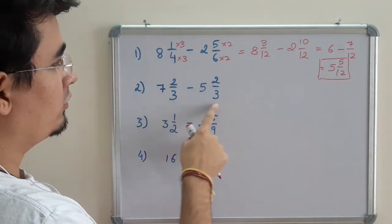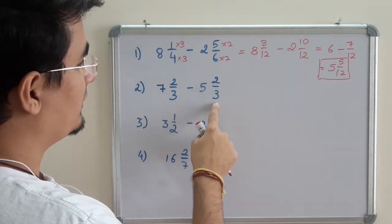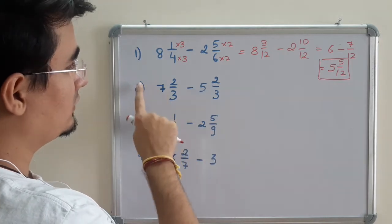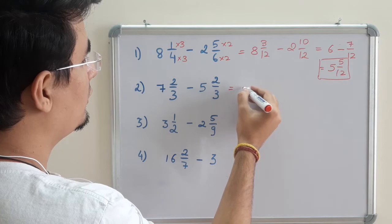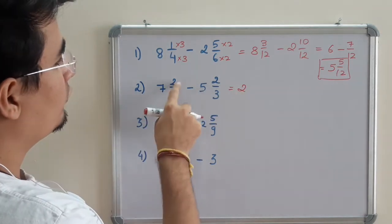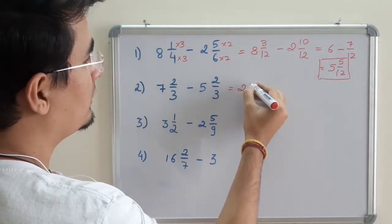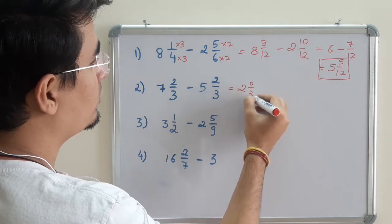The denominator is the same, so I don't have to make the denominator the same by taking LCM. I can just directly subtract them. 7 minus 5 is 2, and 2 minus 2 is 0, so it is 0 upon 3.